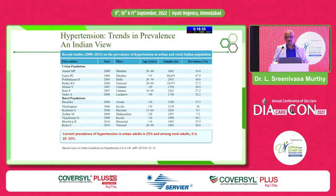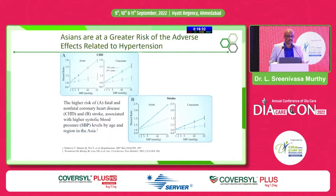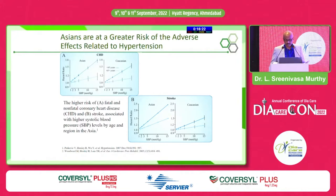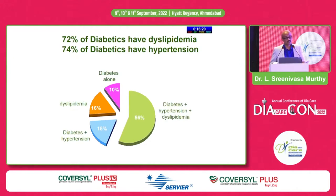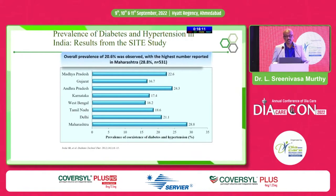As Asians, we are at a greater risk of adverse effects related to hypertension — uncontrolled hypertension combined with the burden plus the risk of adverse effects is very worrying. 74% of diabetics have associated hypertension, and look at the results from this study where an overall prevalence of 20.6% was observed with the reported number in Maharashtra.